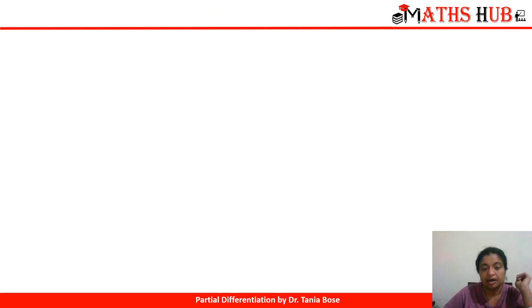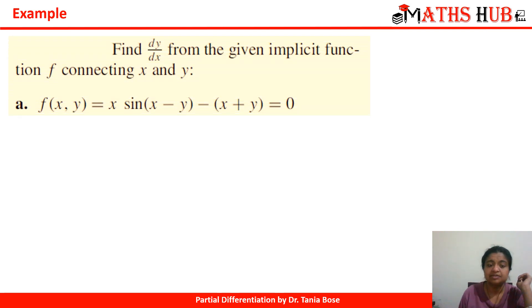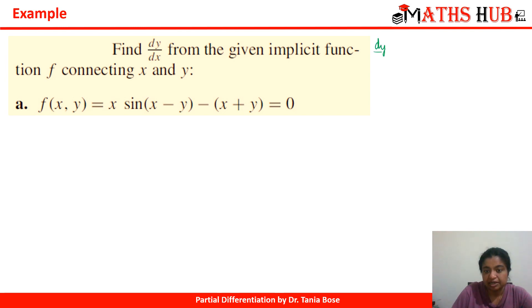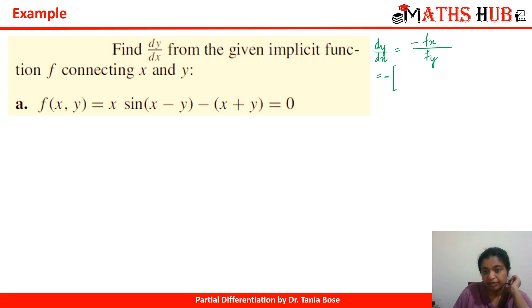Now let's take some examples. We have to calculate dy/dx for the function x·sin(x − y) − x + y = 0. Here you can see it is very difficult to extract x in terms of y or y in terms of x. dy/dx is simply −fx / fy, so let's put a negative sign and write the derivatives. Here the first two terms are a product, so we apply the product rule.